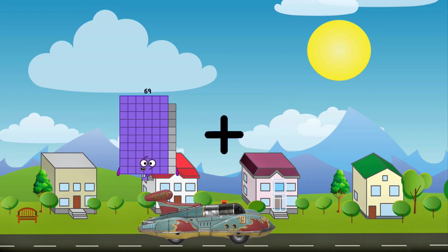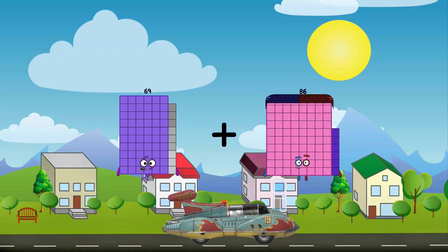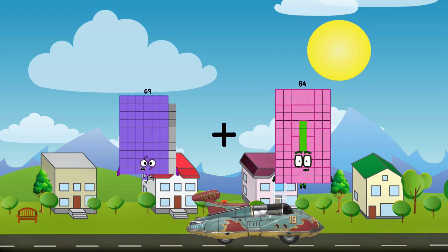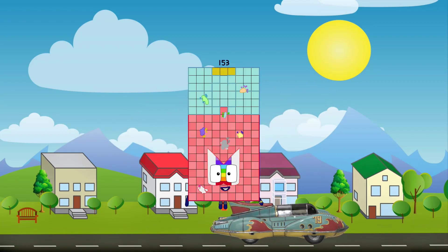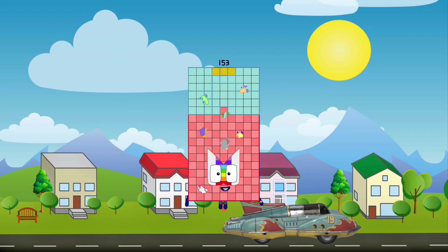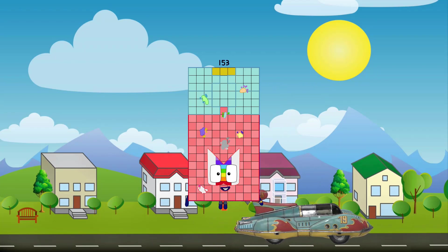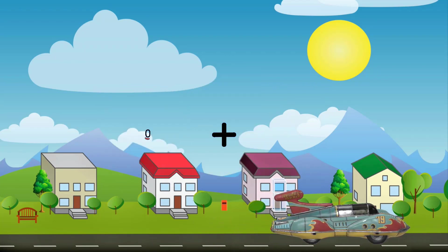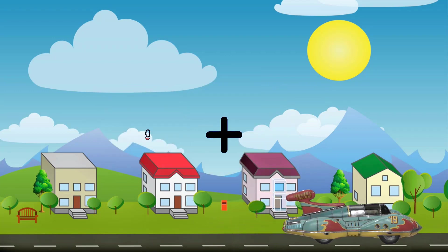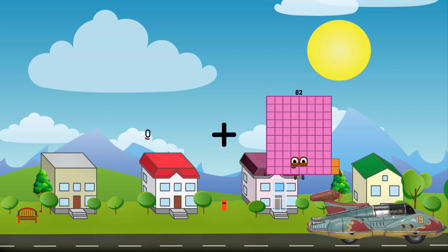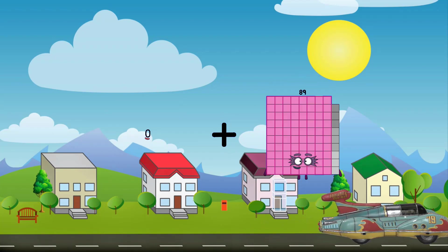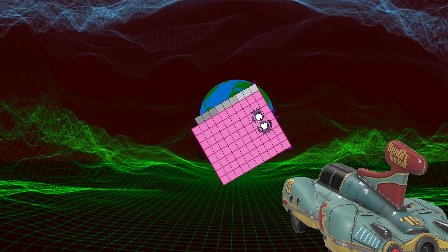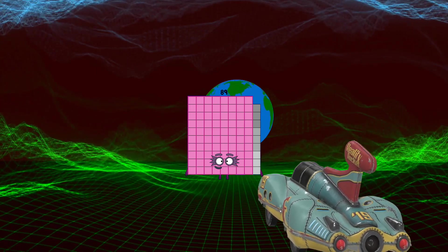69 plus 84 equals 153. 0 plus 89 equals 89.